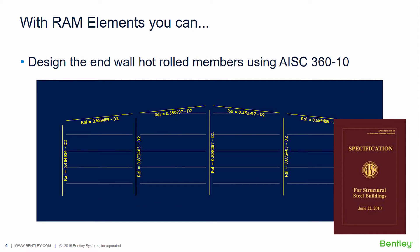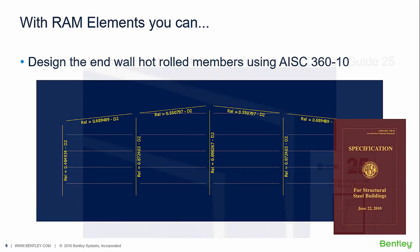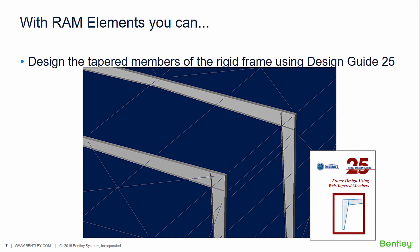RAM Elements, one of the general purpose structural analysis and design products from Bentley, allows you to design everything in one place — including the hot rolled steel members normally used in end walls, lateral portal frames, strut tubes, crane substructures, or mezzanines. The portal frames with the characteristic tapered columns and rafters that allow a 30% reduction in weight by using built-up plate sections with varying depth are perfectly handled by the software.